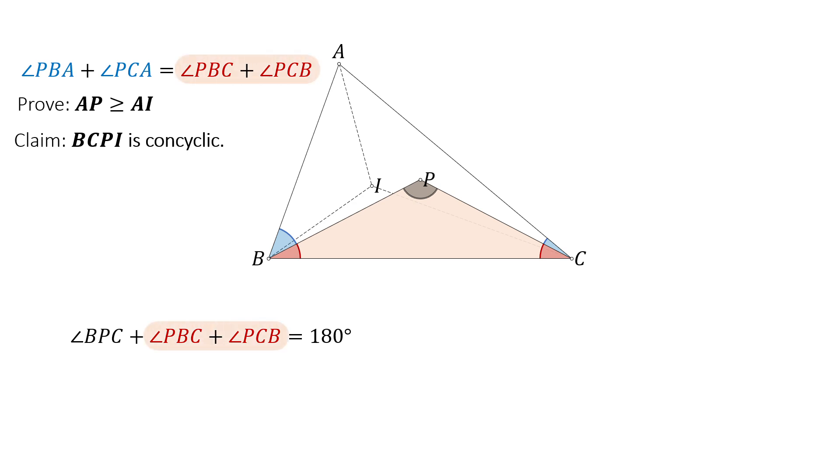It is given that angle PBC plus angle PCB equals angle PBA plus angle PCA. From the diagram, we know that angle ABC equals angle PBC plus angle PBA, and angle ACB equals angle PCB plus angle PCA. Adding these two equations, we get twice angle BPC plus angle ABC plus angle ACB equals 360 degrees.